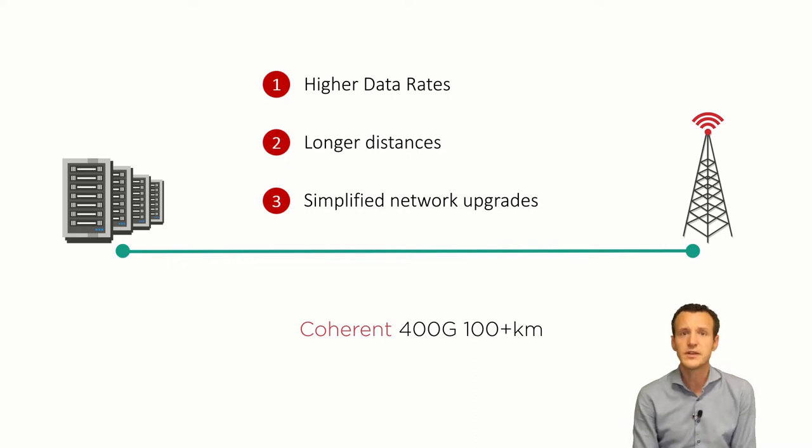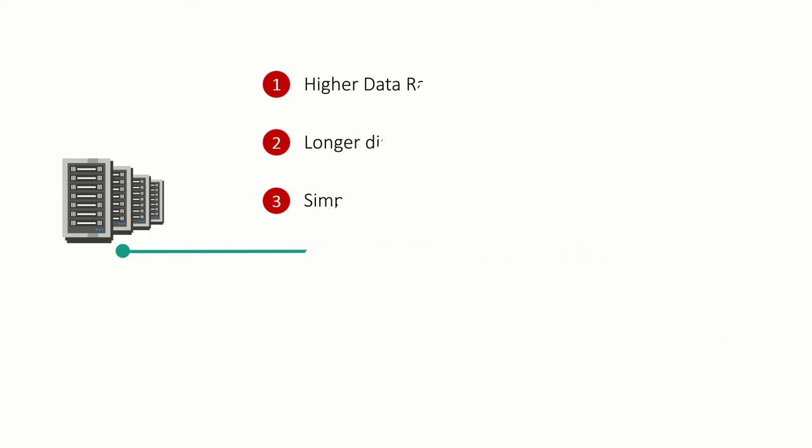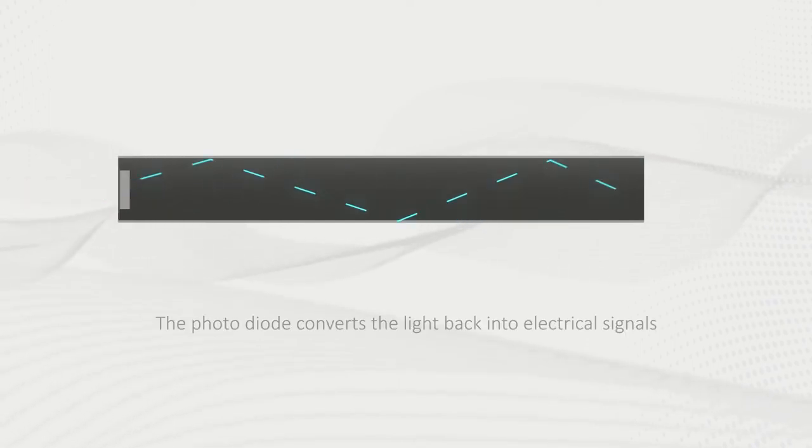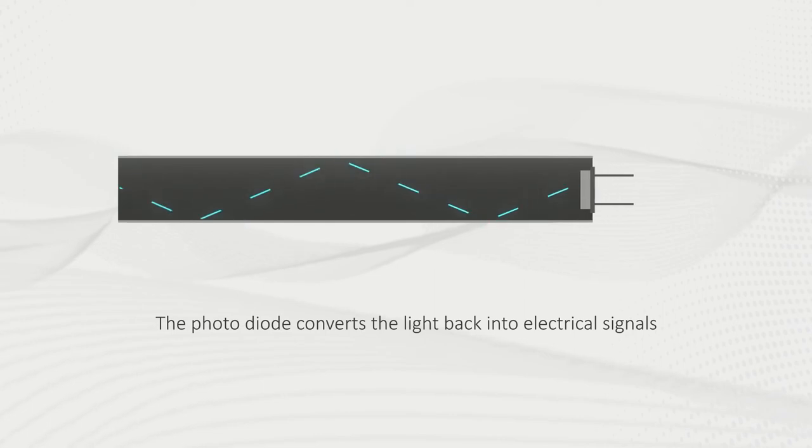If you want to know some more technical details about how this works, please stay with me and I'll explain. In direct detection, the laser on the transmitting side converts the electrical signal to optical on-off pulses. The laser pulses are then picked up by the photodiode on the receiving end, which converts them back into an electrical signal.